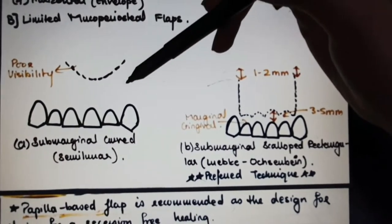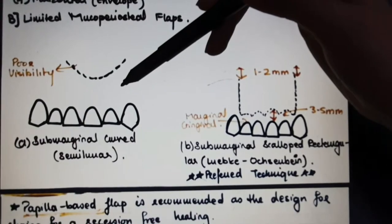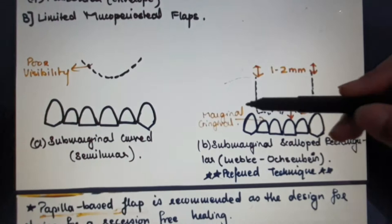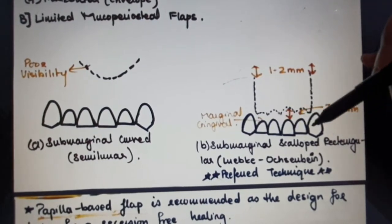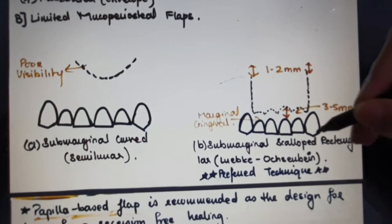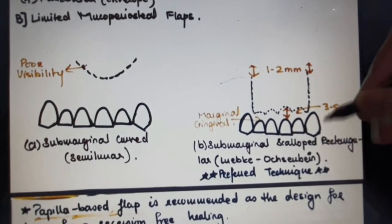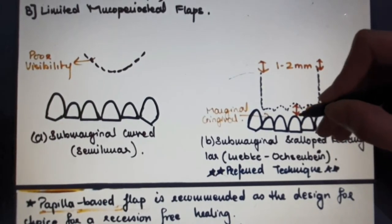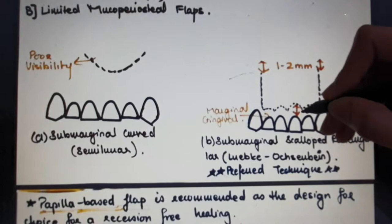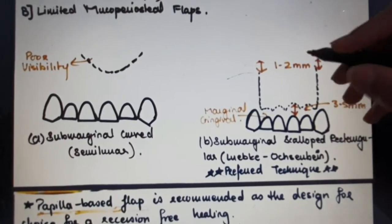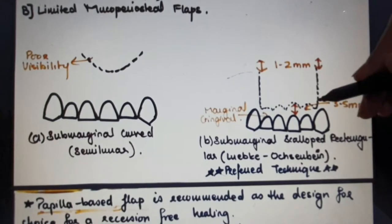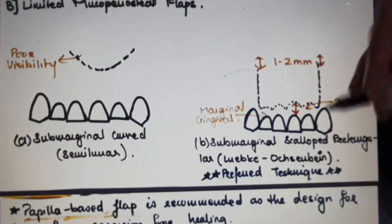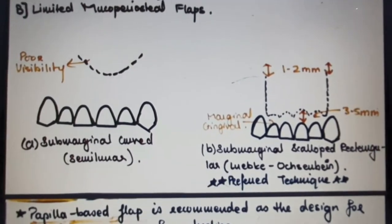In limited mucoperiosteal flaps, we have submarginal curved or semilunar flap with poor visibility, not accepted in most cases. Then we have submarginal scalloped rectangular flap, the preferred technique for apexectomy procedure. The incision is given 3-5mm above or below the marginal gingiva and sulcus depth, with vertical releasing incisions 1-2mm away from the mucobuccal fold.